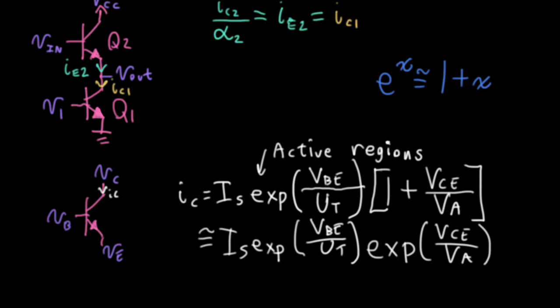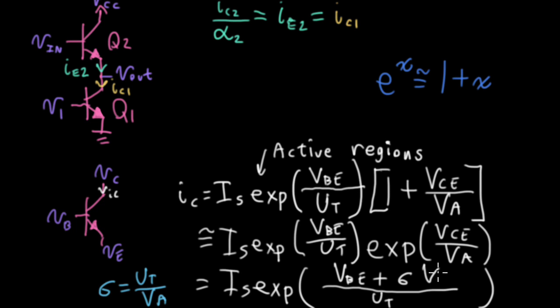I'll say that this is exp VCE over VA. Now, there's one more thing I want to do here. Let's make a little change of notation. It's perfectly innocent. I'll say that sigma is equal to UT over VA. So if I do that, I can rewrite this as IS exp, whole bunch of stuff over UT. I'll write VBE plus sigma times VCE. So if I plug my sigma into here, the UTs cancel, and I wind up with the one over VA that I want. This is the kind of expression that also comes in handy when dealing with subthreshold MOSFETs.